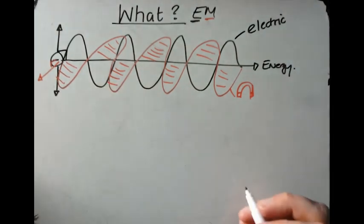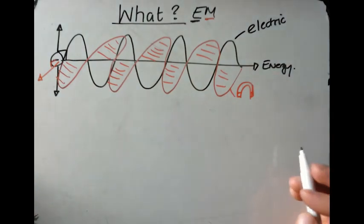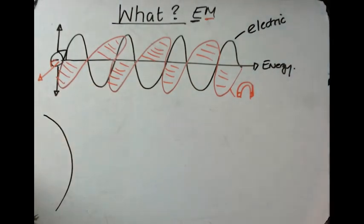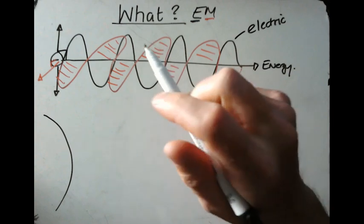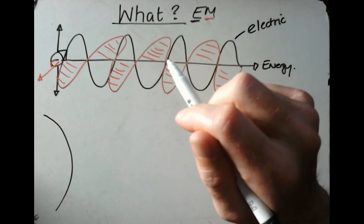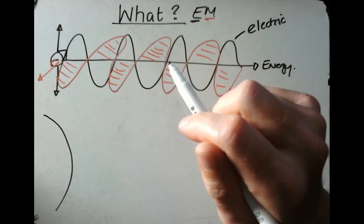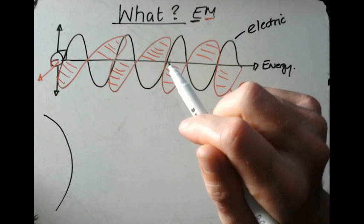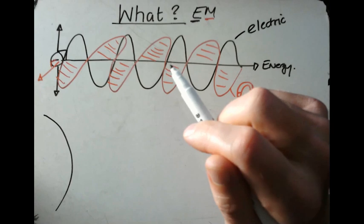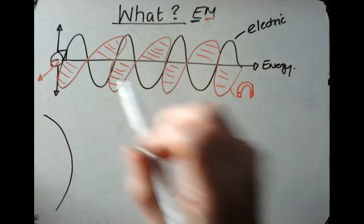Now, the properties of EM waves are what makes them special. From the very first video on waves, we said there were two different categories of waves. We had mechanical waves — ones that needed a medium to travel through. So there need to be actual particles — a solid, liquid, or gas — that the particles could vibrate within so the wave is passed through it.